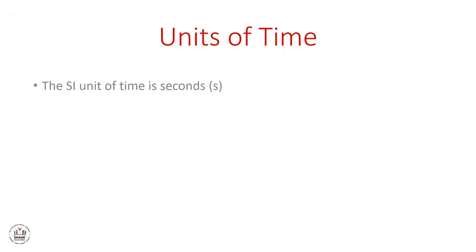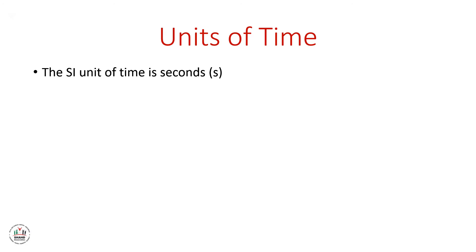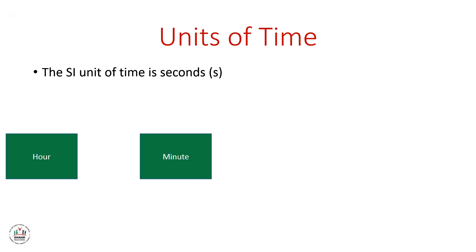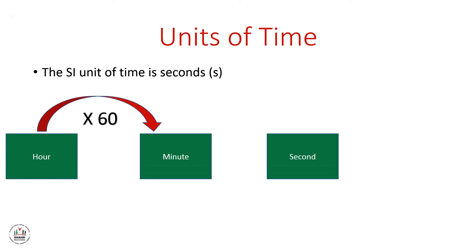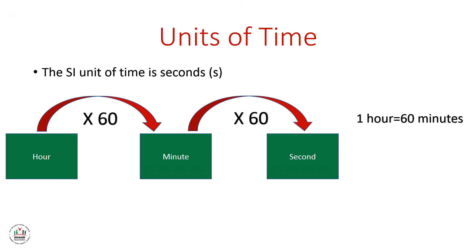What are the units of time? The SI unit of time is seconds, notated as the letter S. We have three units of time: hours, minutes, and seconds. To convert from hours to minutes, we multiply by 60, so 1 hour equals 60 minutes. To convert from minutes into seconds, we also multiply by 60, so 1 minute equals 60 seconds.